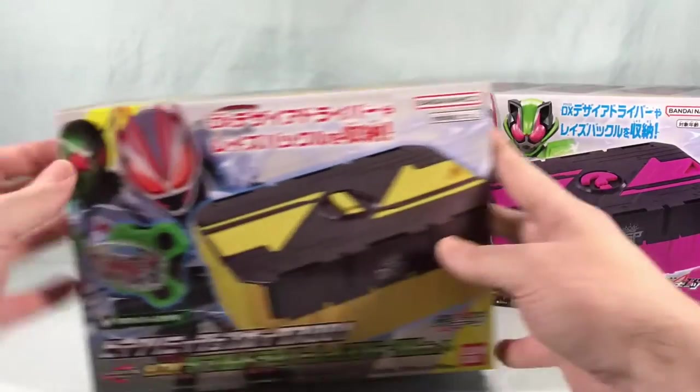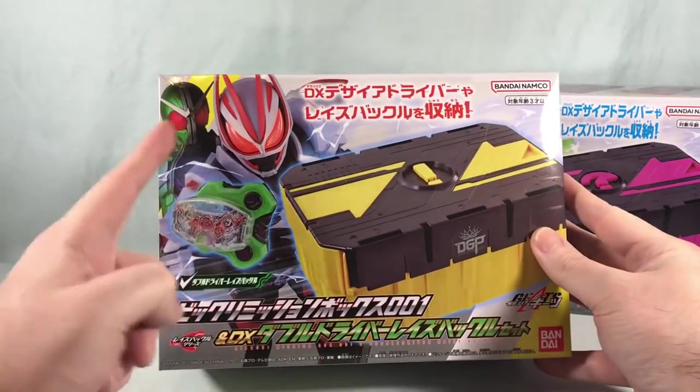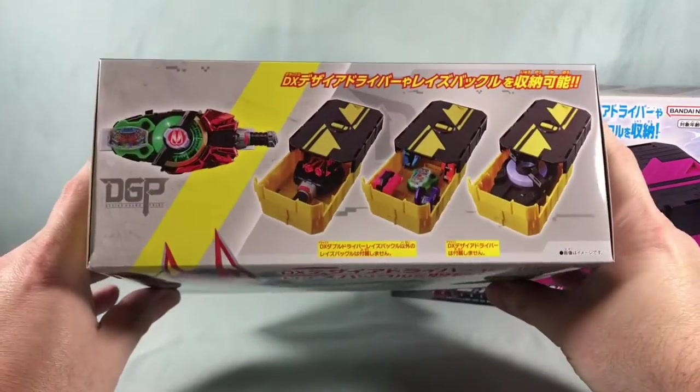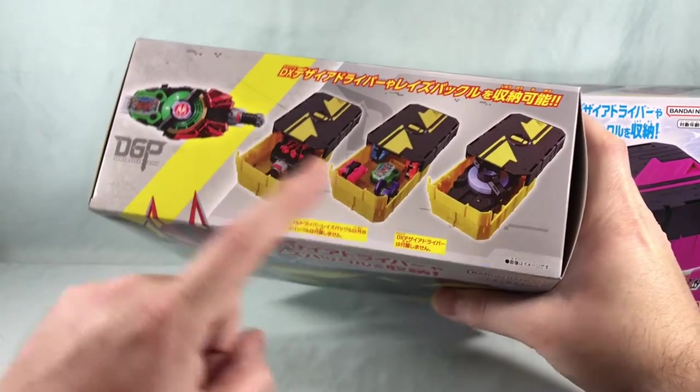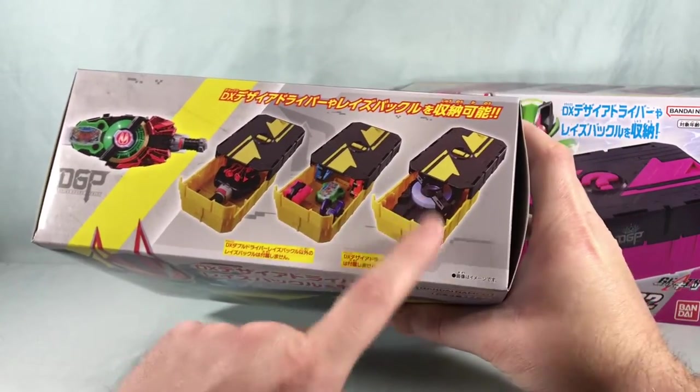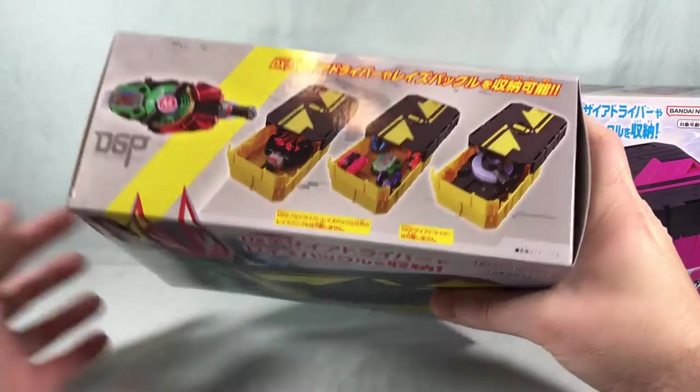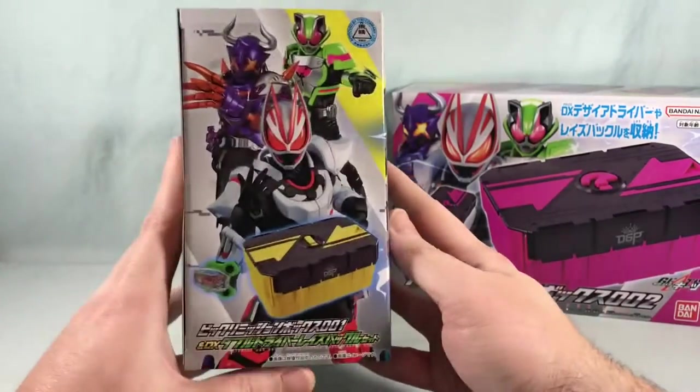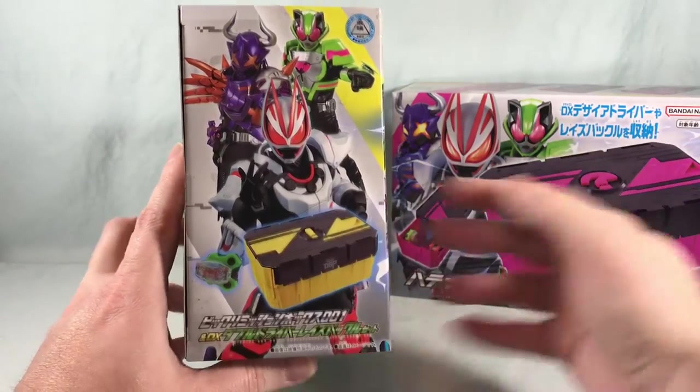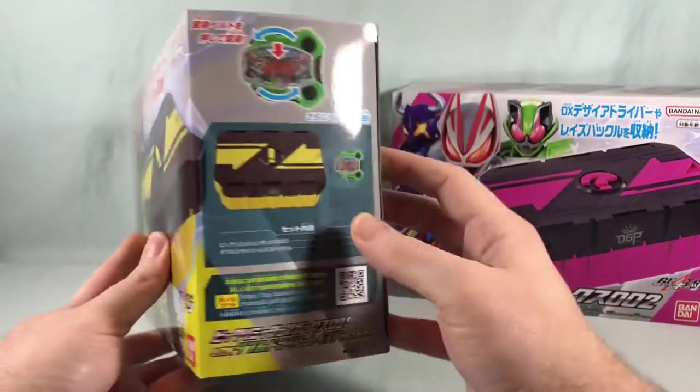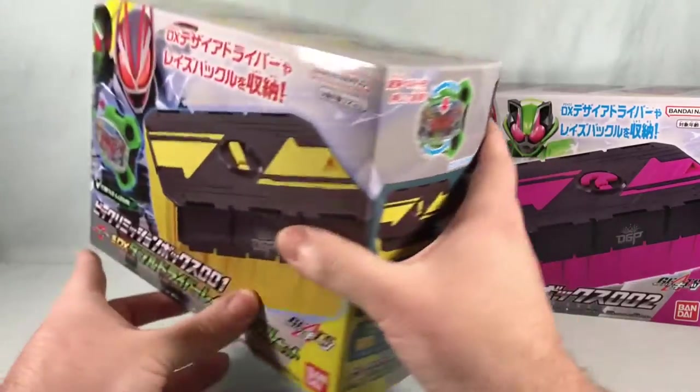Taking a quick look at the packaging here. This one has Geats and Double. On the top you can see different storage options - you can store one of the larger buckles, a couple of the smaller buckles, or even the driver, which is pretty cool. On this side there's a group shot of Tycoon, Buffet, and Geats as well as the contents of the box.